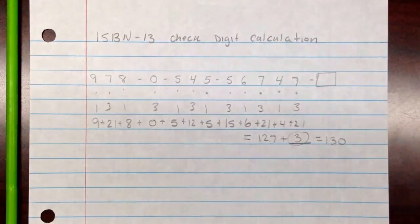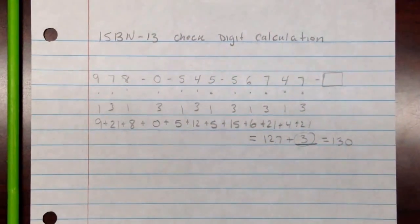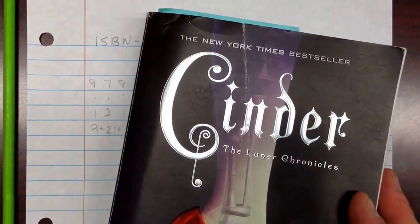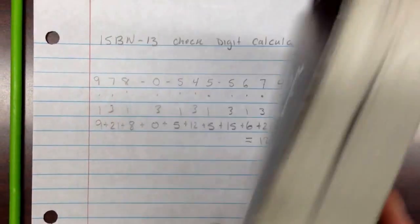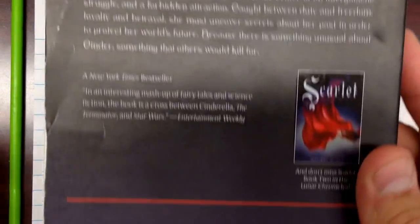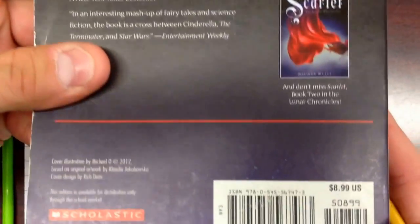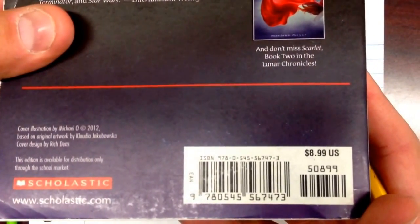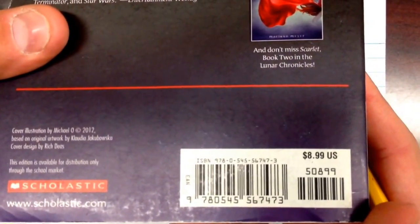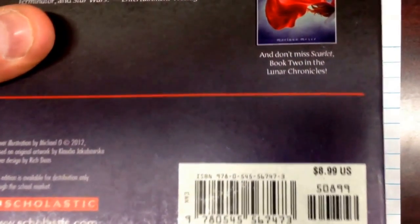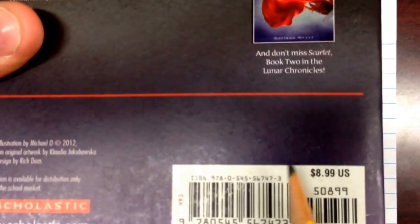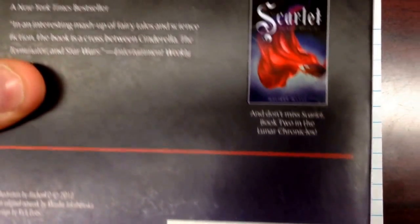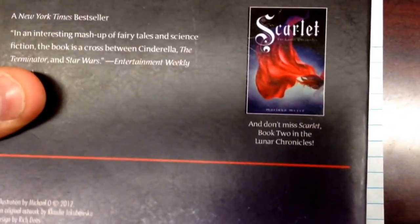I actually got this ISBN number from this book — this Cinder book right here. I know you can't see it underneath, but maybe you can. It is there. You can see it — the digits are the same numbers I had there, and the check digit is 3.